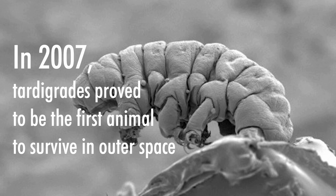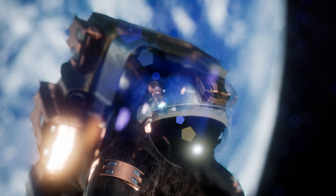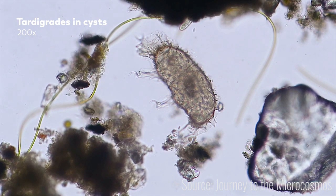Well, in 2007, tardigrades proved to be the first animal to survive in outer space. A group of astronauts aboard the Photon M3 mission to carry out astrobiology research managed to expose a group of tardigrades to the outer space situation and then rehydrate them on the Earth. The result was that some of them surprisingly survived.